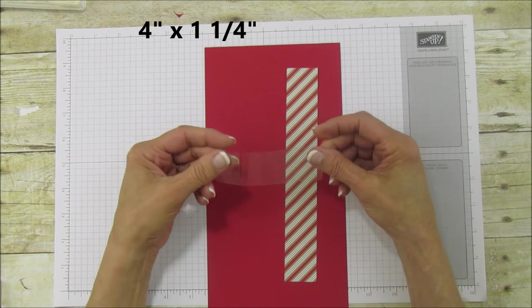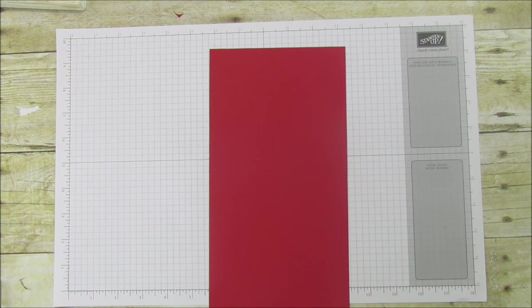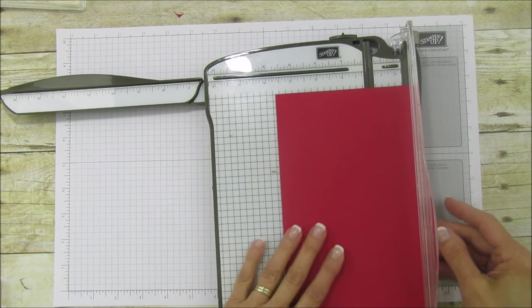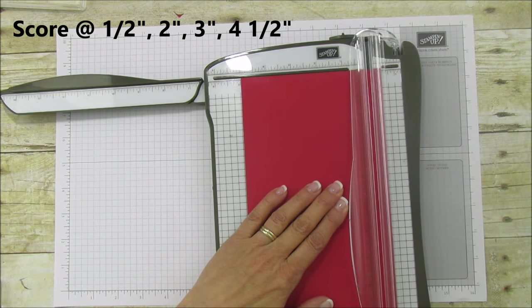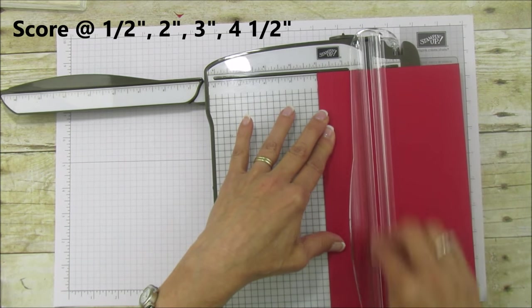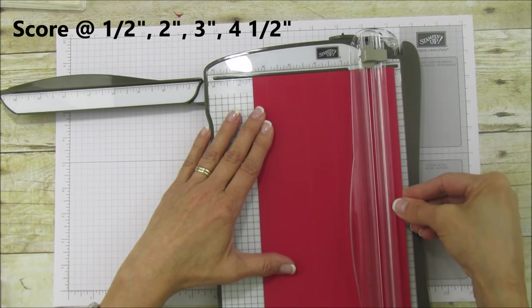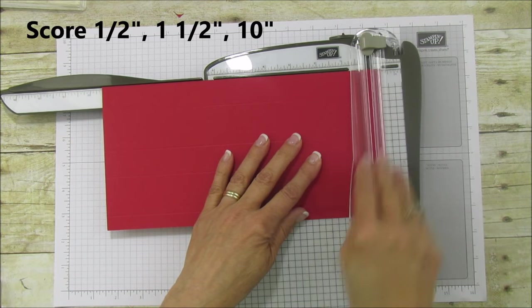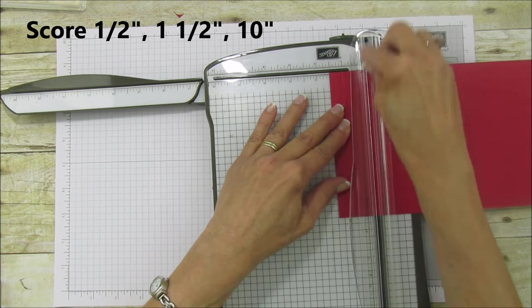Then we're going to need a window sheet at 4 by 1 and a quarter. So on the 5 and a half inch side we're going to score it at one half inch, then at two, at three, and at four and a half. Then we're going to turn it on the 11 inch side and do it at one half, then one and a half, and at ten.